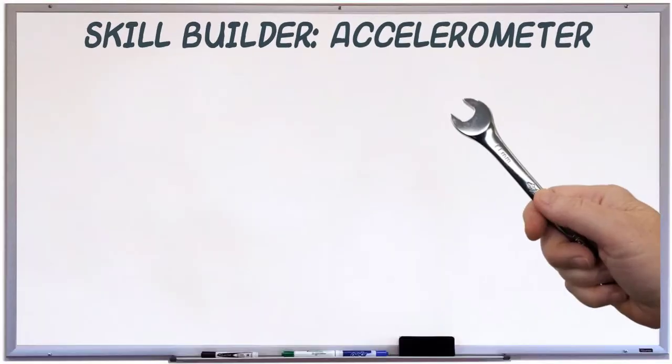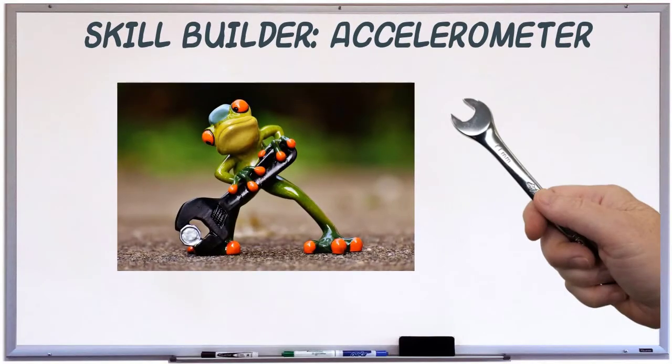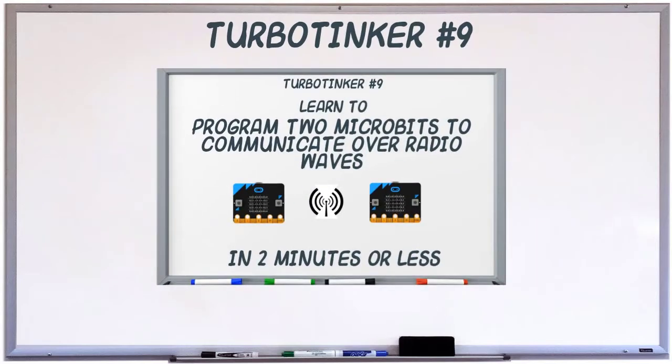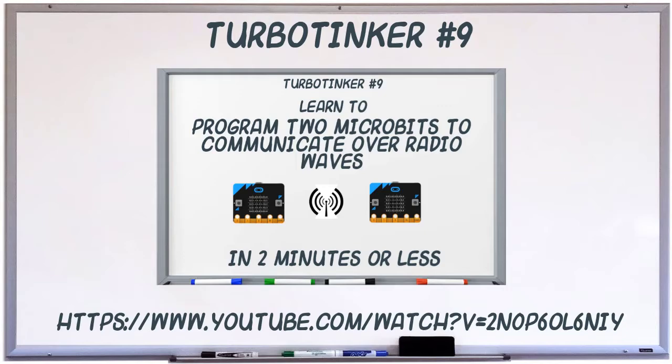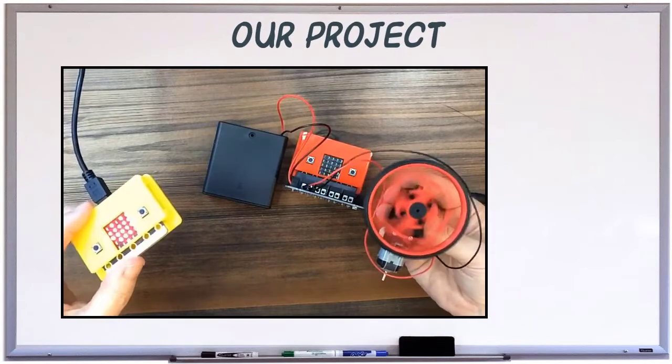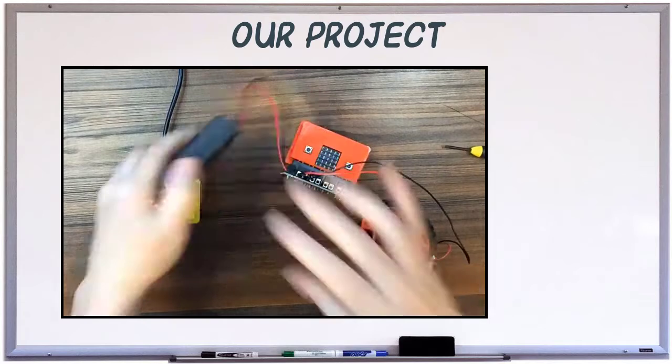This is a skill builder video, meaning we'll cover the basics and use what we learn here later in a real project. We're continuing from TurboTinker number 9 where we learn to send accelerometer readings between two microbits. Now we're going to add a motor and control the speed of that motor as we tilt the second microbit.